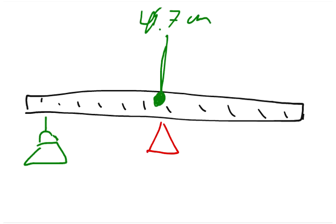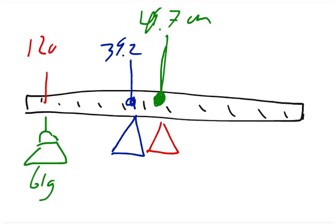And so then we add this weight over here, which is 61 grams. When we add the weight of 61 grams, we have to move our fulcrum to 39.2. So this spot is 39.2, and this is hung at 12 centimeters. Now we have to figure out what the mass of the ruler is, what the mass of this meter stick is.